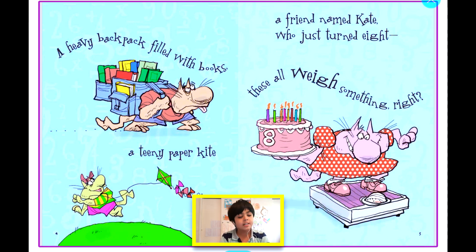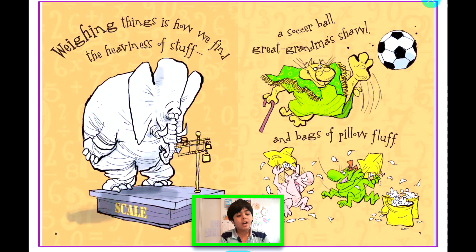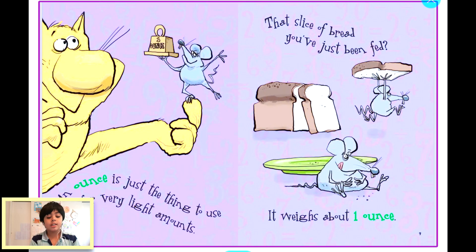Weighing things is how we find the heaviness of stuff. A soccer ball, great grandma's shawl, or bags of pillow fluff. An ounce is just the thing to use for very light amounts.